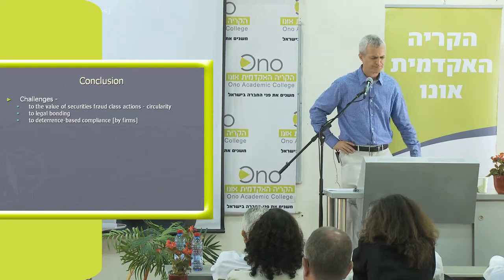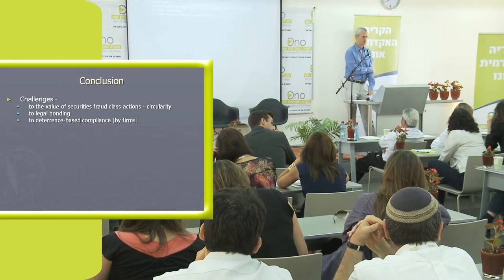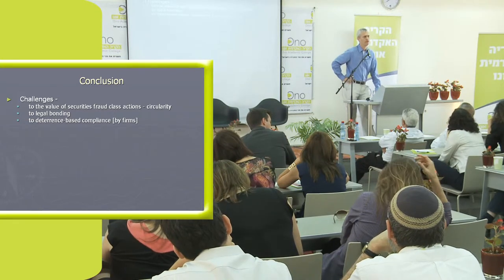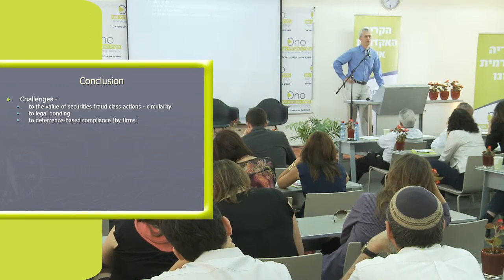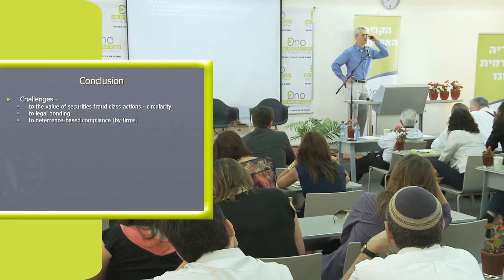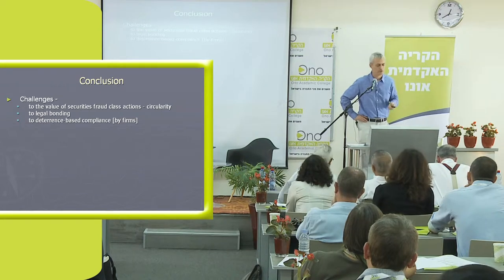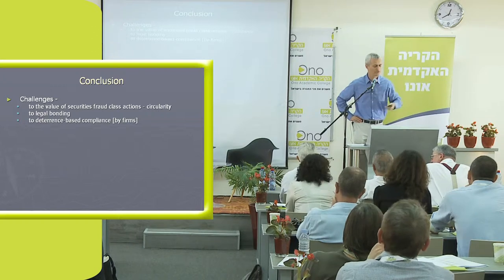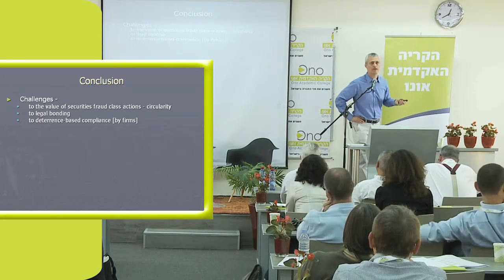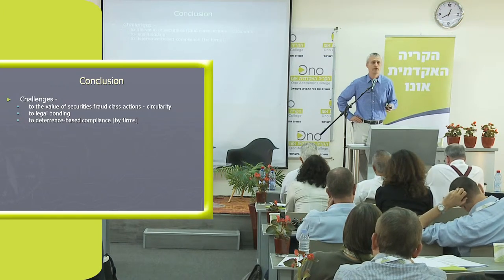If you believe our results, the paper poses a number of challenges — most basically to the value of securities fraud class actions. This is in line with a literature of the last 20 years discussing the circularity problem: class actions don't serve any good purpose because what happens in a securities fraud class action is current shareholders paying past shareholders, which is a wash. The only parties happy with that are the lawyers and the insurers. It may also, if you believe the results, be a challenge to legal bonding and, more fundamentally, a challenge to deterrence through civil liability.